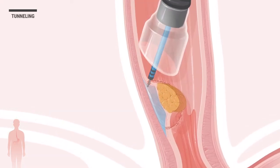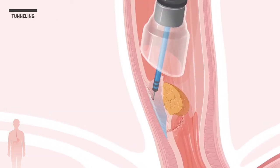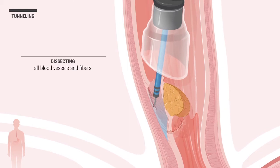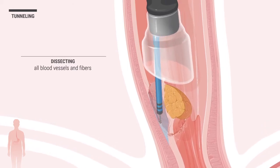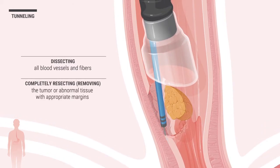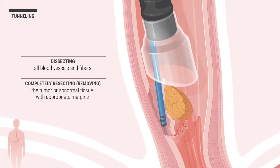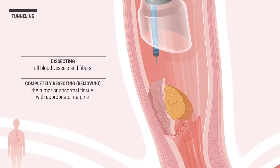After, the knife is used to tunnel under the abnormal tissue, dissecting all blood vessels and fibers and completely resecting or removing the tumor or abnormal tissue with appropriate margins.